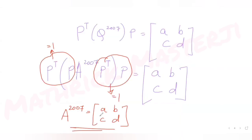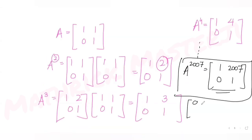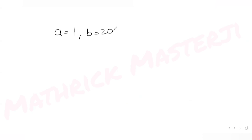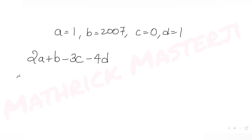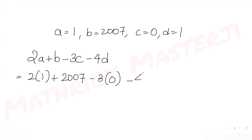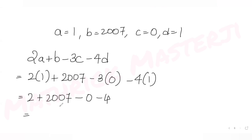Since A^2007 = [a,b; c,d] = [1,2007; 0,1], we get a=1, b=2007, c=0, d=1. Now computing the expression: 2a + b - 3c - 4d = 2(1) + 2007 - 3(0) - 4(1) = 2 + 2007 - 0 - 4 = 2005.